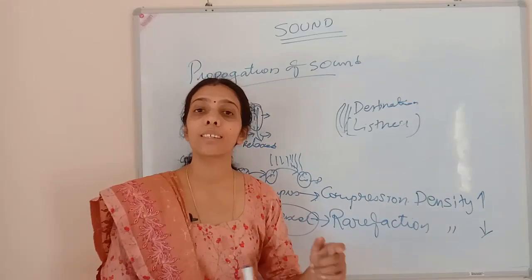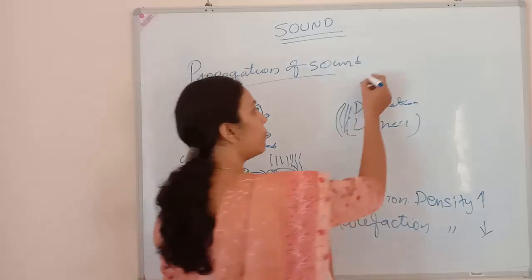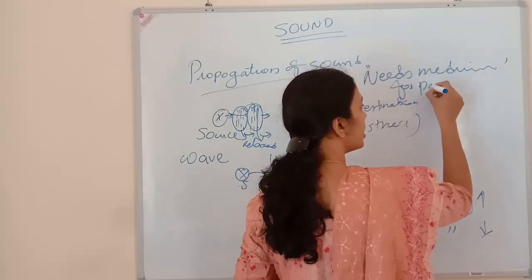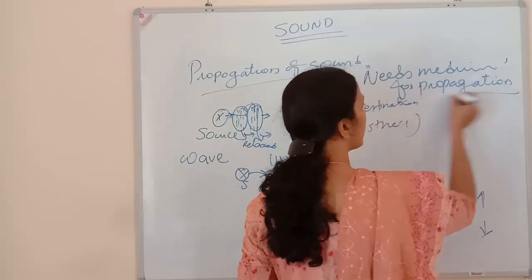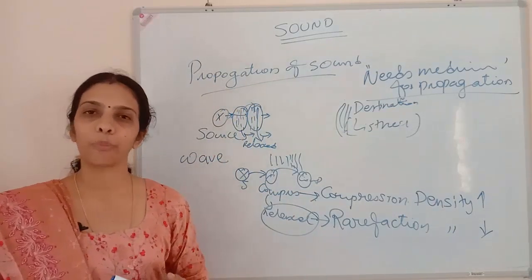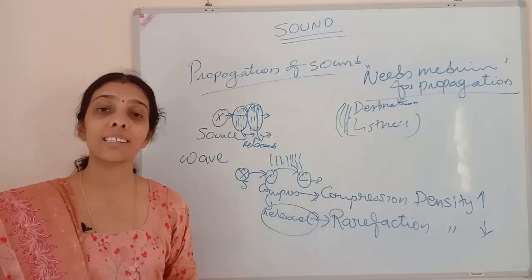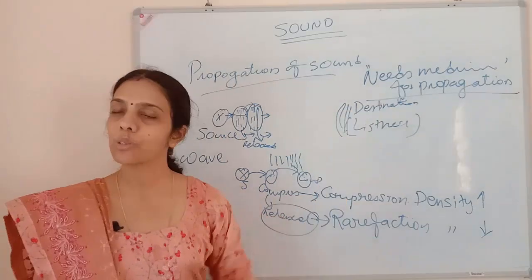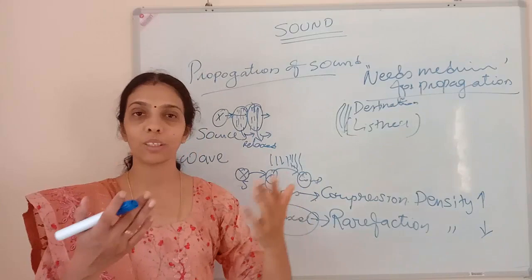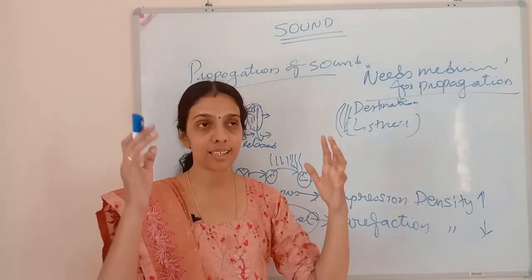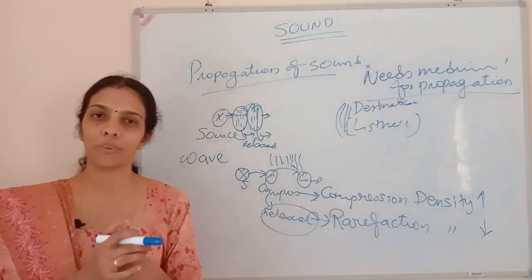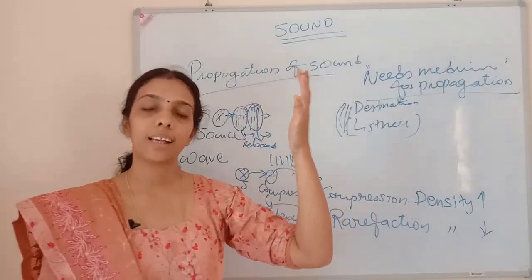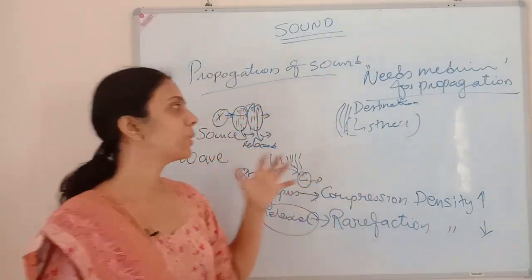If there is a big gap between benches and nobody is there to take the pen and pass it, it can't move. Similarly, if there is no medium in between, the sound waves can't travel. Sound wave needs a medium for traveling — it needs a medium for propagation. Sound wave needs medium for propagating from one point to another. If medium is not there, the sound waves can't propagate. That is why in celestial objects, while they are interacting or colliding with each other, we can't hear the sound here — because there is no medium.